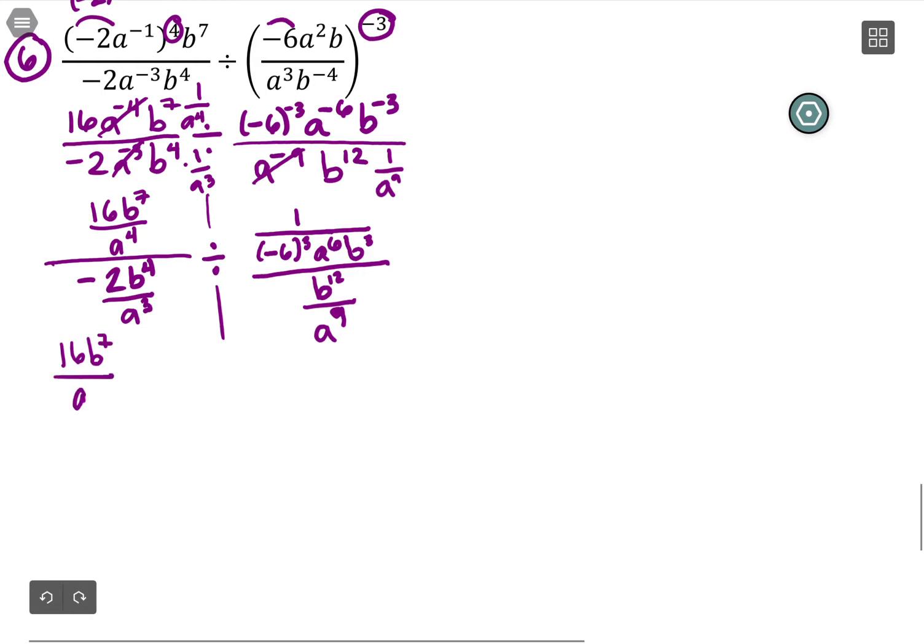Multiplied by a cubed over -2b to the 4, and then that's going to get divided by...